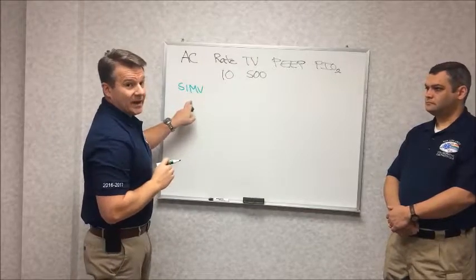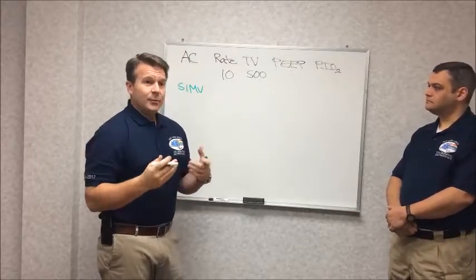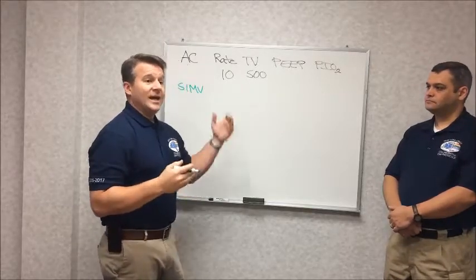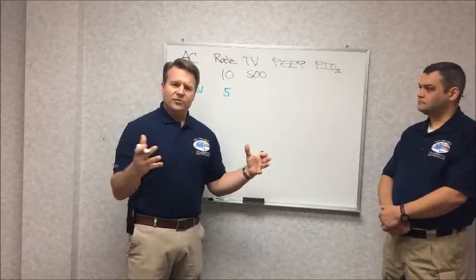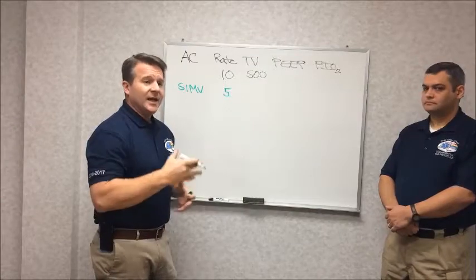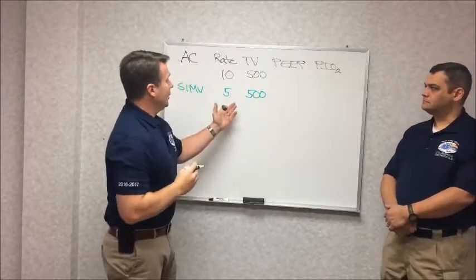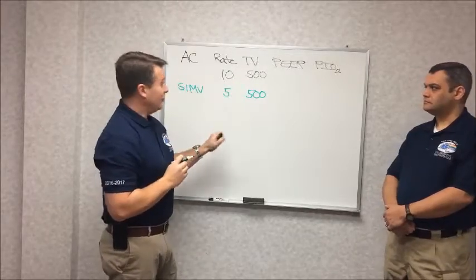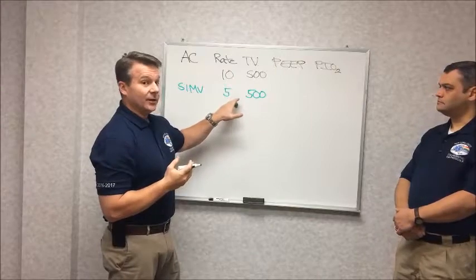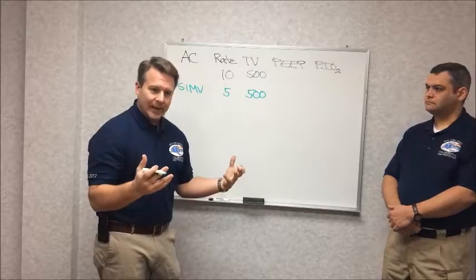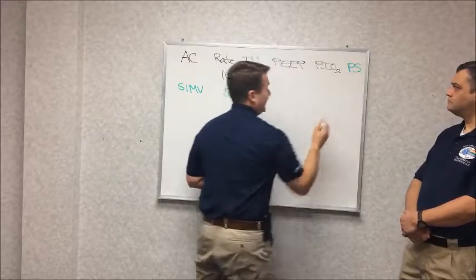Synchronized intermittent mandatory ventilation — with SIMV you still set a rate, but on the inpatient side we tend to set a rate somewhat lower than what we would have set in assist control. Let's say we set the rate at 5. Traditionally SIMV is a mode used to start to wean the patient, so you've usually been on a ventilator for some time, except in the PACU setting where it's used routinely. You still set a tidal volume — keeping the math simple, the patient gets 5 breaths a minute instead of 10, so every 12 seconds the ventilator gives that same 500 cc's. We add one more parameter with SIMV: pressure support.